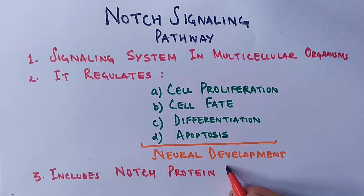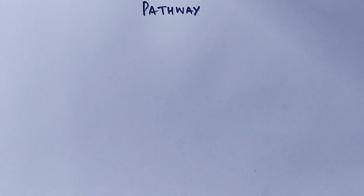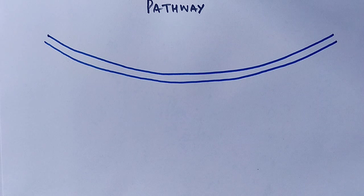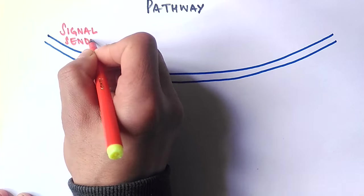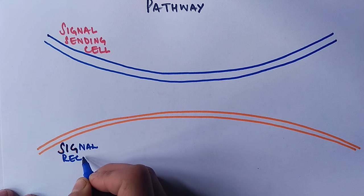We know it includes NOCH proteins that are of four types: NOCH 1, NOCH 2, NOCH 3, and NOCH 4. Let's see the mechanism of how this pathway occurs between two cells and how they communicate with each other. This NOCH signaling pathway mediates juxtacrine signaling when both the signal sending and signal receiving cells are affected.